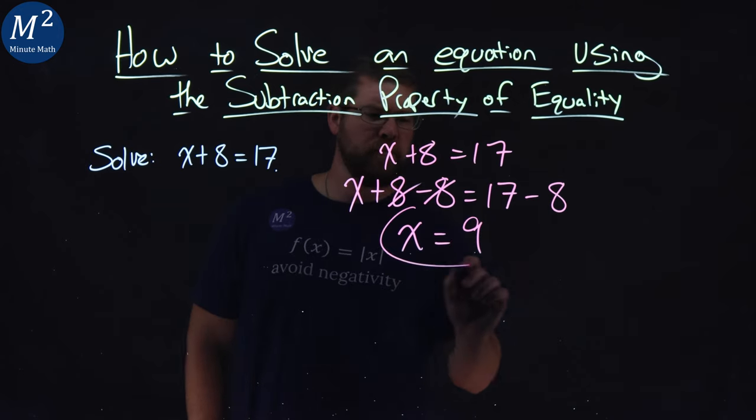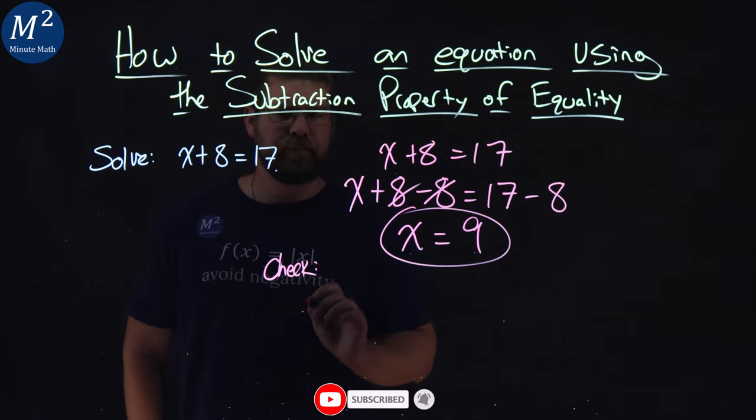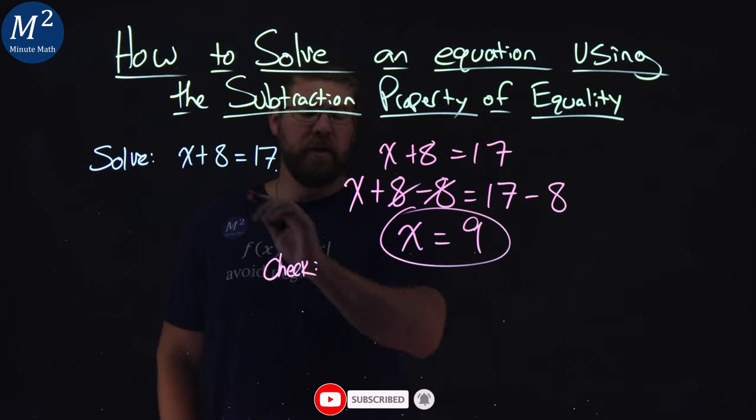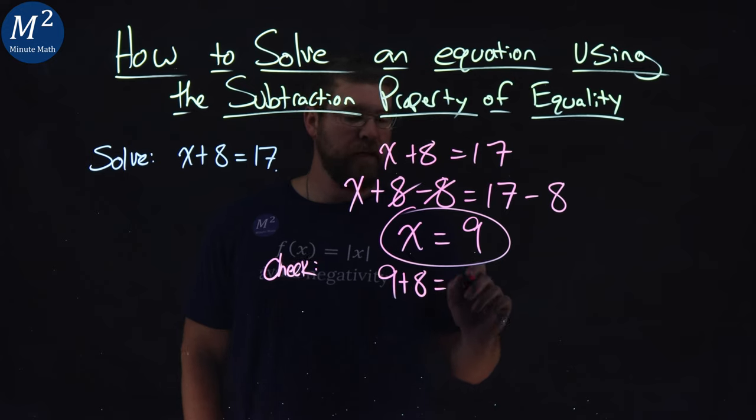So we got x equals 9, but we want to check that. So I'm going to check it. To check it, I rewrite my equation, x plus 8, but instead of an x, I put that 9 in. So I have 9 plus 8 equals 17.